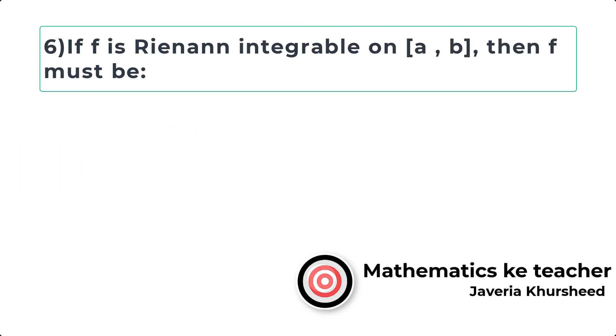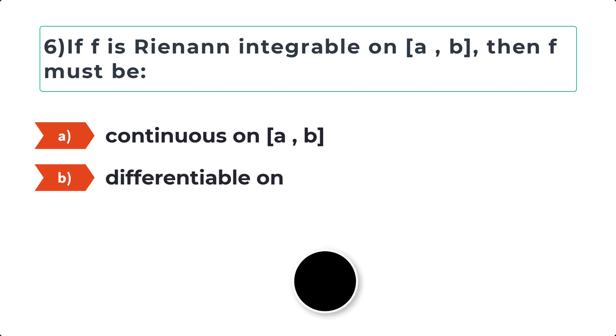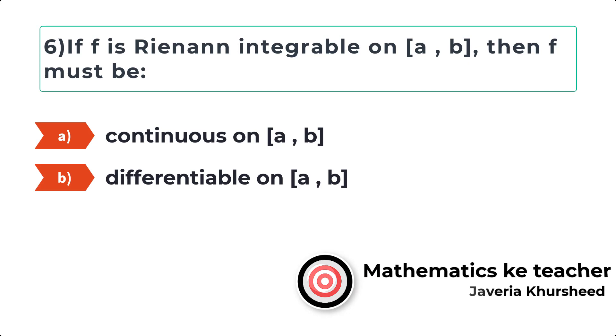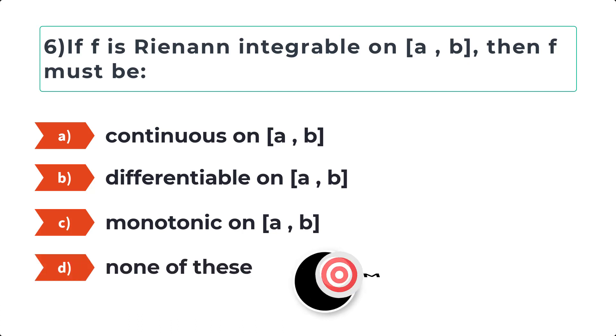Question 6: If f is Riemann integrable on closed interval from a to b, then f must be: A) Continuous on [a, b], B) Differentiable on [a, b], C) Monotonic on [a, b], D) None of these.